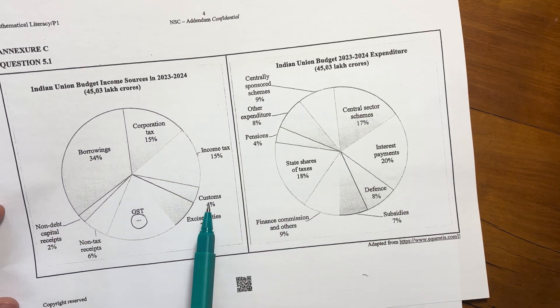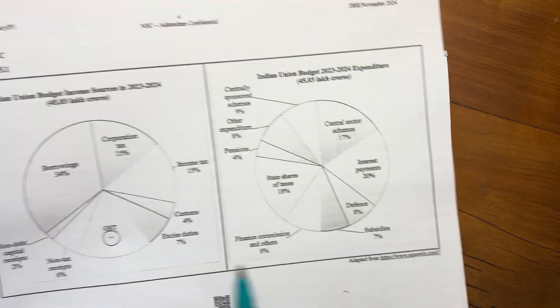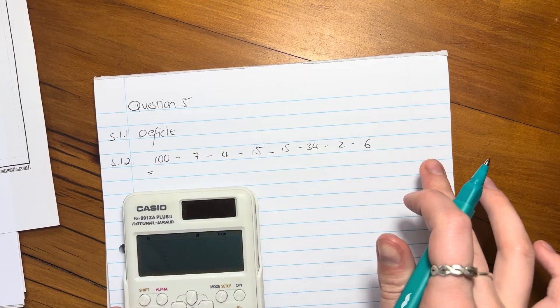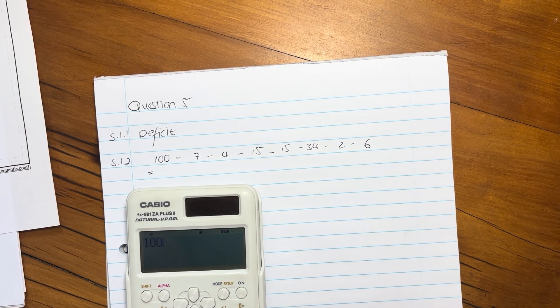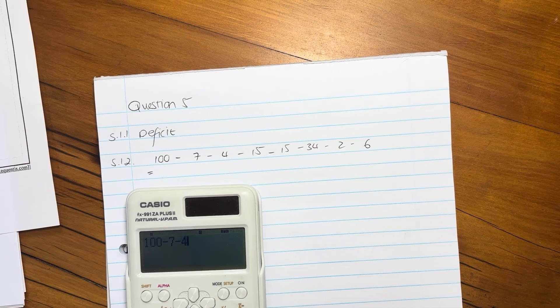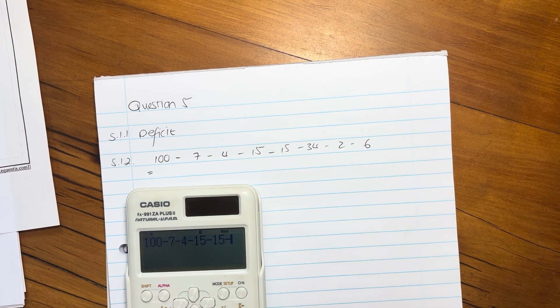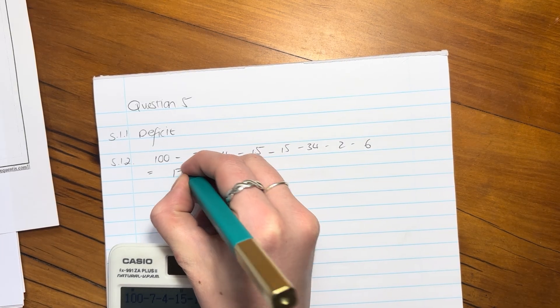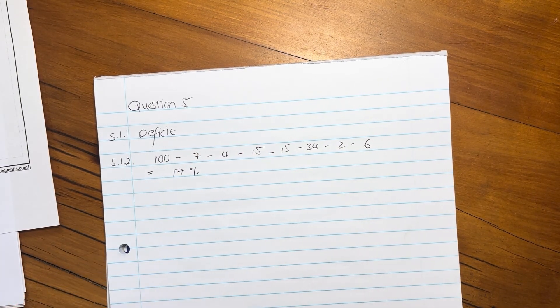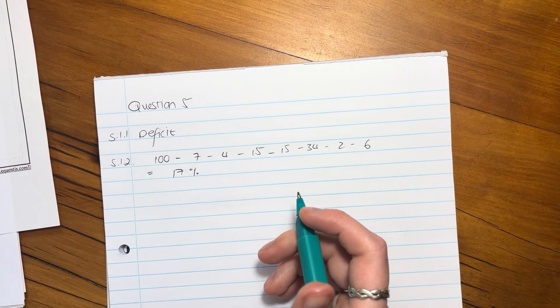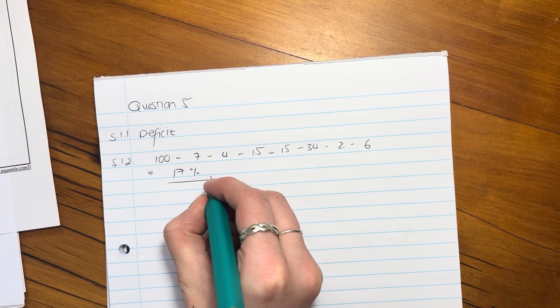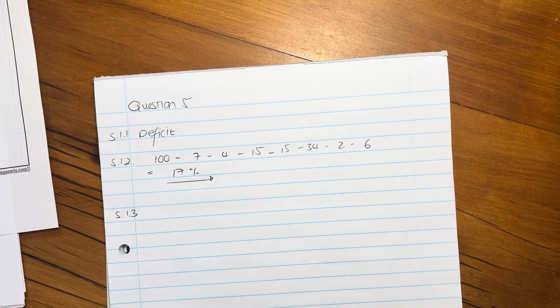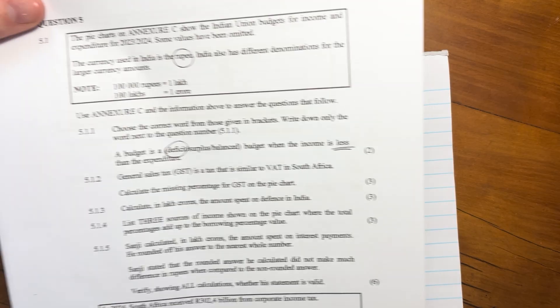And whatever's left would be my GST. So we just say 100 minus 7 minus 4 minus 15 minus 15 minus 34 minus 2 minus 6. I got those all from here. Put that into your calculator. You don't have to put the percentages into the calculation there. You can just do it at the end. And it gives me 17. But it's not 17 anything, it's just 17%. So GST, my general sales tax, is 17%. And we're done. So you see a lot of this comes down to understanding what is the actual nature of a pie chart.